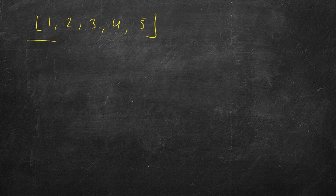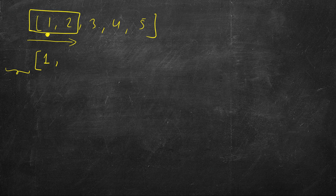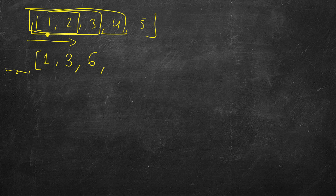When we are at the first position, the running sum is just 1 — the sum of all elements to the left, and there is nothing to the left of 1. Running sum till index 0 is 1. Running sum till index 1 is 1+2=3. Running sum till the third index is 3+2+1=6, then 10, and finally 15.